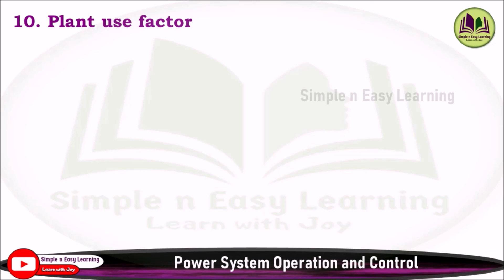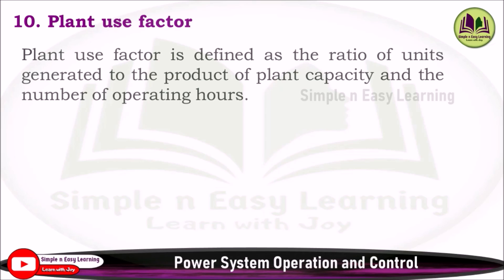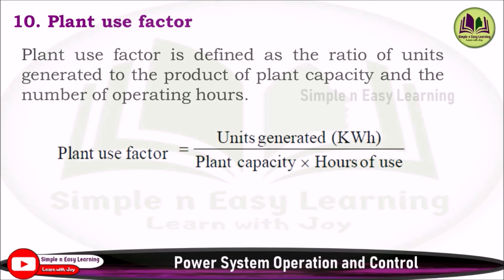Tenth: plant use factor. Plant use factor is defined as the ratio of units generated to the product of plant capacity and the number of operating hours. Plant Use Factor = Units Generated / (Plant Capacity × Hours of Use). These are the 10 important definitions and formulas you can use while solving problems based on load curve and load duration curve.